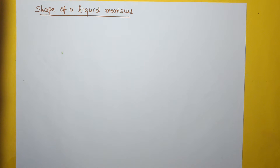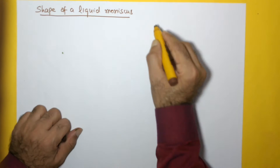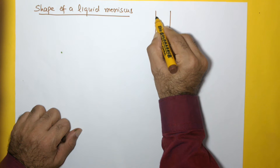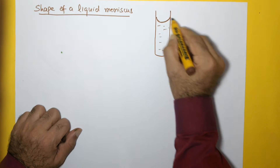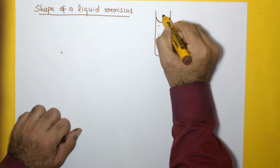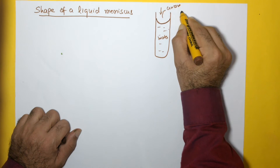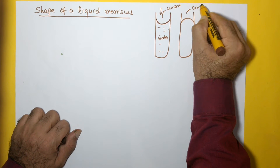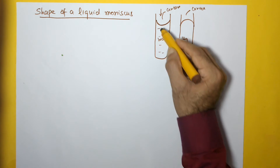We continue topics related to surface tension, and here's one more concept: the shape of a liquid meniscus, which has a relationship with surface tension and cohesive and adhesive forces. If we have a test tube in which we pour water, the top surface takes a shape known as a meniscus. This is called a concave meniscus because when we look at it from this direction it appears concave. Whereas if we pour mercury into the same glass test tube, the meniscus shape is a convex meniscus.